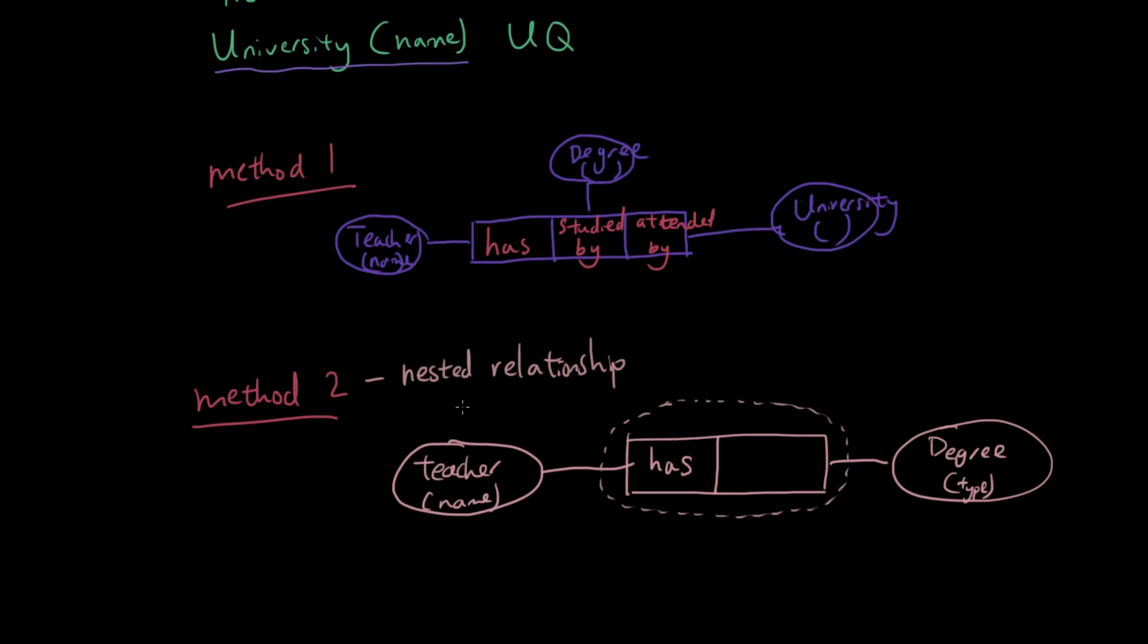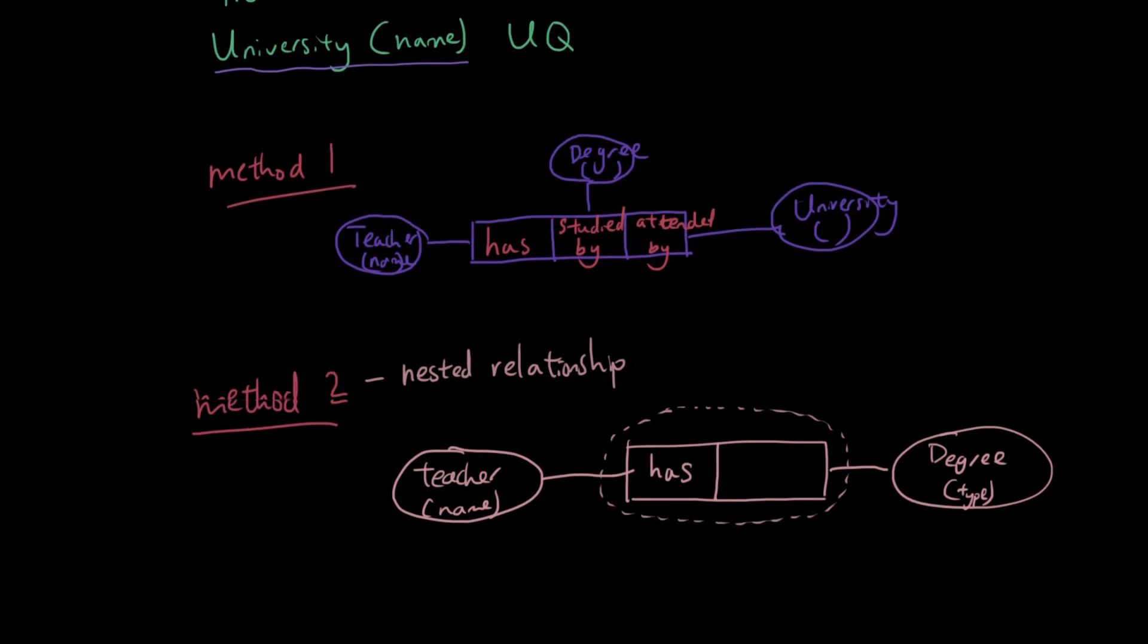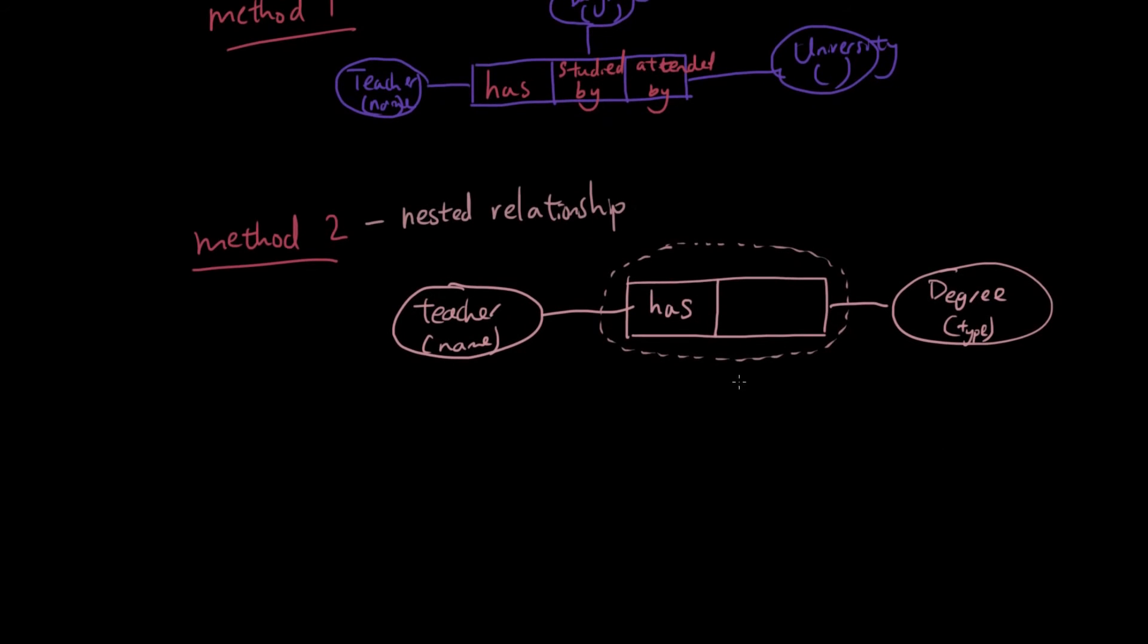So we're pretending that this relationship is an entity itself. And then I'm going to draw a relationship coming out of this relationship. And then I'm going to say, teacher has a degree from this university, which is identified by its name.